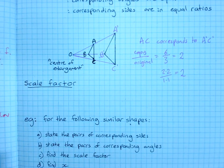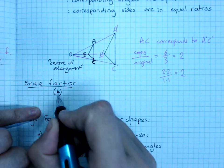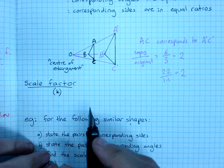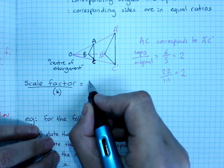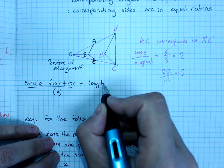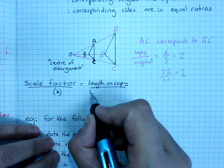So the scale factor, which often gets the abbreviation K, is found by doing the length on the copy divided by the matching length on the original.